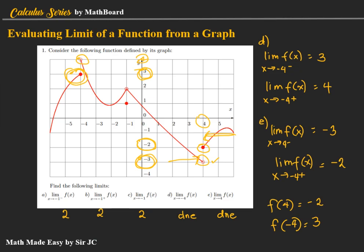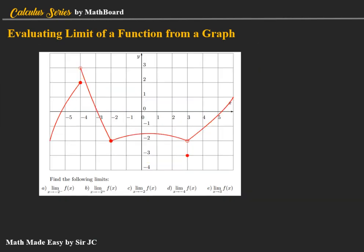Let's have another example. Evaluate the limit of the given function given the graph. Letter A: the limit of f of x as x approaches negative two from the left. This is our negative two. From the left, the value being approached is negative two. For letter B, negative two from the right — still negative two is being approached. Since left and right are both equal to negative two, the limit of f of x as x approaches negative two is negative two.